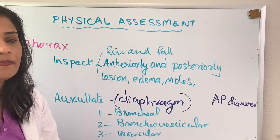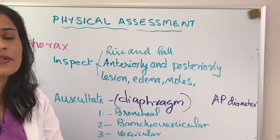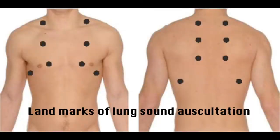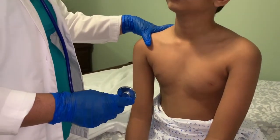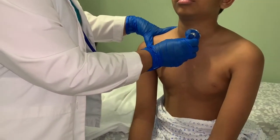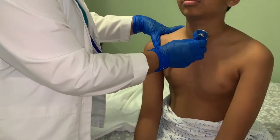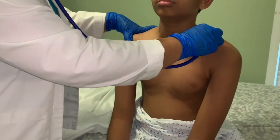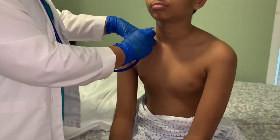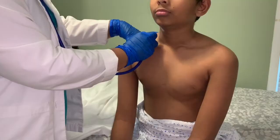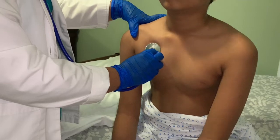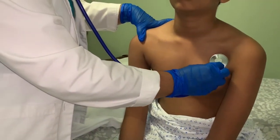We place the stethoscope diaphragm in different positions on the chest to listen to lung sounds. When I ask you to take a nice deep breath, please do it. First, listen over the trachea — that is bronchial sound. Second, above the clavicle on the right side. Third, second intercostal space, then parallel to the second intercostal space on the opposite side.